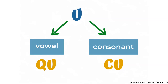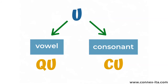Let's clarify with a couple of examples. In the first two words, we have the letter A after the vowel U, so we write them with a Q. The following two words instead are written with the letter C because the U is followed by a consonant.